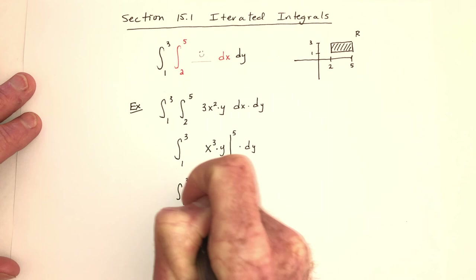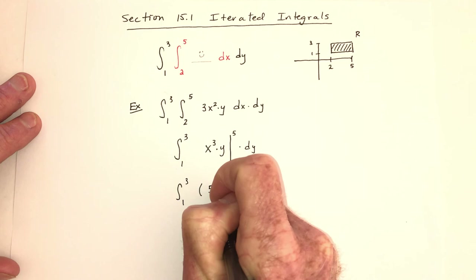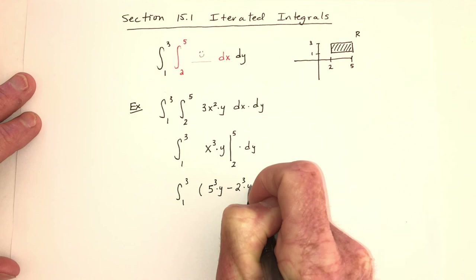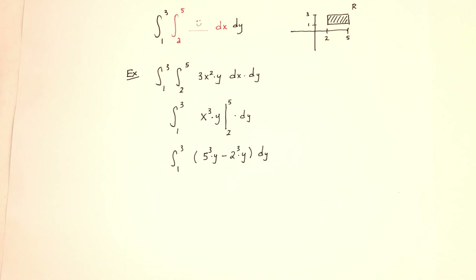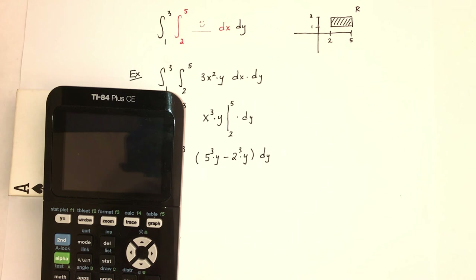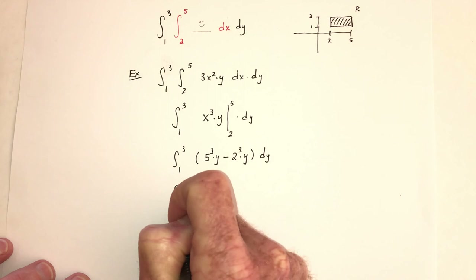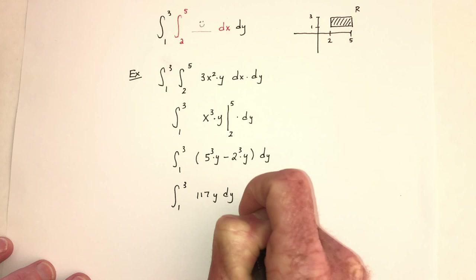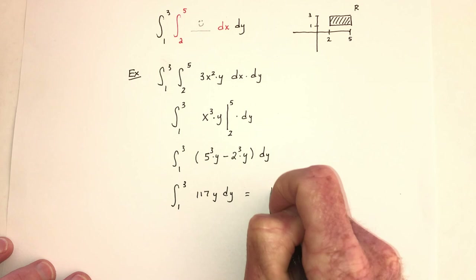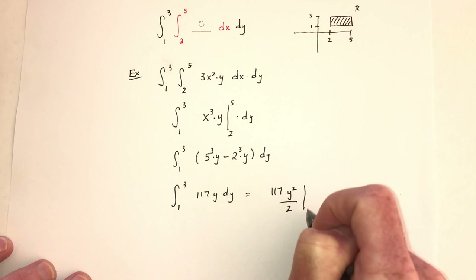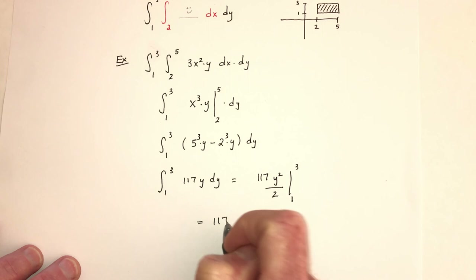So this is going to be five cubed times y minus two cubed times y, and then there's still dy. How much is five cubed minus two cubed? That's 117. Five cubed minus two cubed is 117. So now I need to integrate from one to three, 117 times y. The antiderivative here is going to be y squared over two, so the 117 just sits there. Then it's y squared over two, evaluated from one to three.